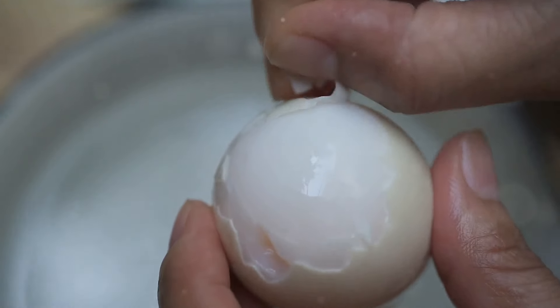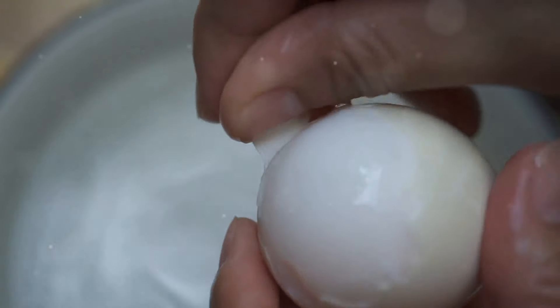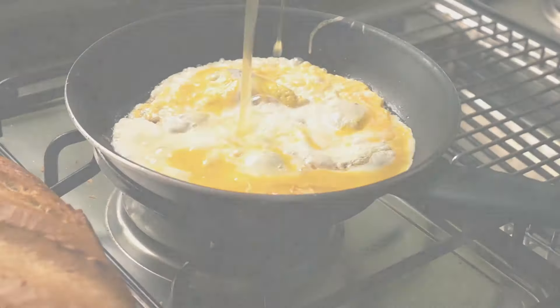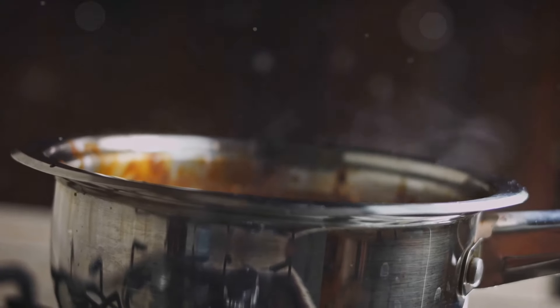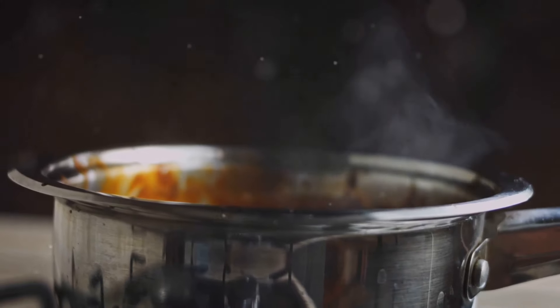While the traditional stove method is the most popular, you can also boil eggs in the microwave. Here's a breakdown of both methods. Place eggs in a single layer in a saucepan. Fill the saucepan with water, covering the eggs by about an inch.